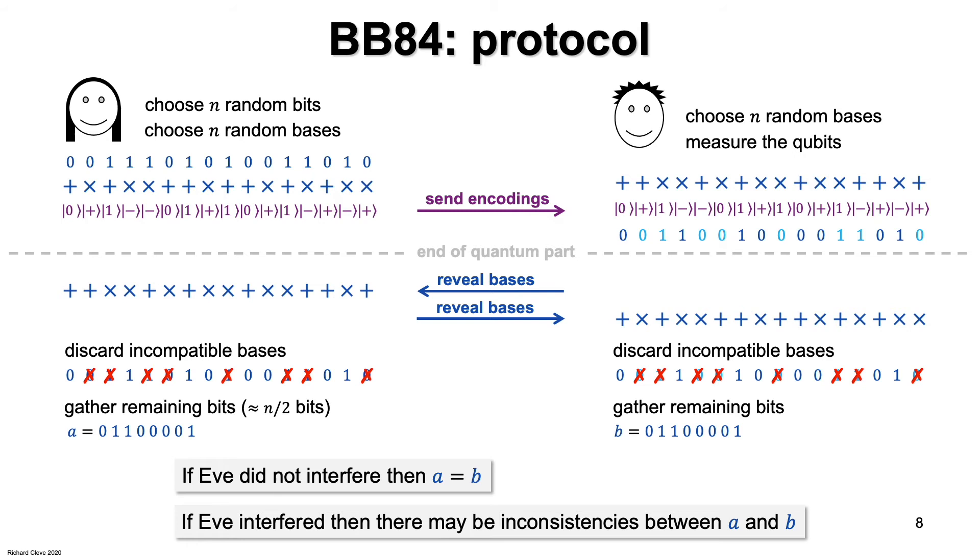On the other hand, if Eve tried to measure some of the bits in transit, then the encoded states will be disturbed, so A might not equal B. Let's consider how that can work. Suppose Eve measures all the qubits in transit in a basis that she chooses randomly herself, since she doesn't know which basis Alice and Bob used. Consider all the bits of A and B, which are the cases where Alice and Bob chose the same basis. For each such qubit, there will be a 50% chance that Eve chose the same basis as Alice and Bob. Those are the lucky cases for Eve, because those bits will still match up between Alice and Bob. But the cases where Eve chose the wrong basis, the unlucky cases, her measurement will project the qubit to the other basis. Whenever that happens, the chance of Bob's measured bit being the same as Alice's bit will be 50%. As a result of all this, each bit of A and B will match with probability 75%. So around one quarter of the bits of A and B will be different.